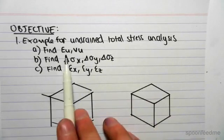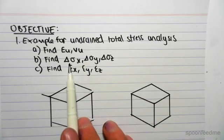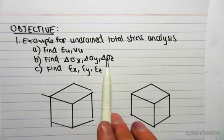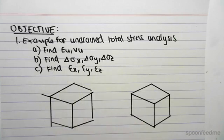We do that by finding e subscript u, v subscript u, we then find the change in stress in the x, y, and z direction, and then we can find the strains in the x, y, and z direction.